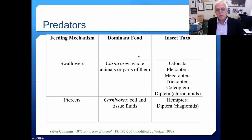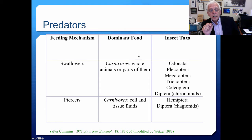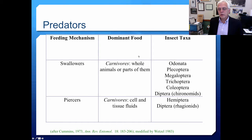Predators include a variety of feeding modes. They divide into those who swallow whole animals or parts of them, and those that pierce them and suck out the tissues — such as the Hemiptera and Rhagionid Dipterans. Those that eat whole animals include the Odonata, Plecoptera, Megaloptera, Trichoptera, Coleoptera, and various carnivorous Dipterans.